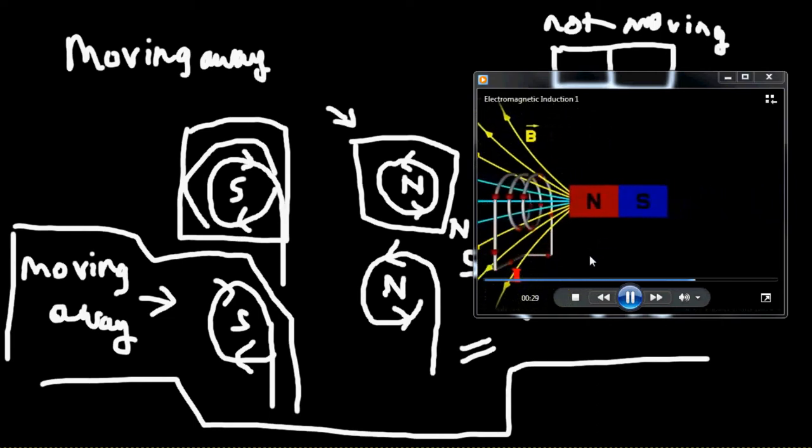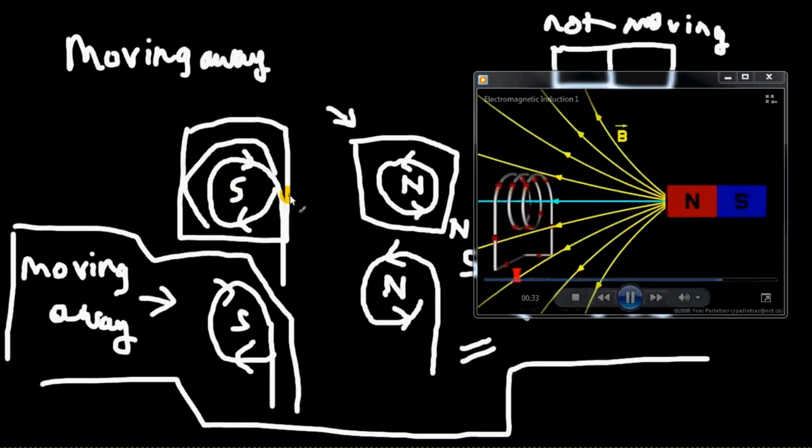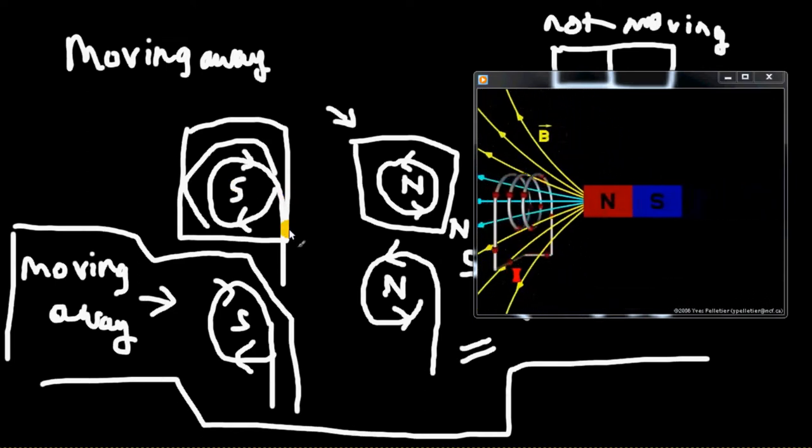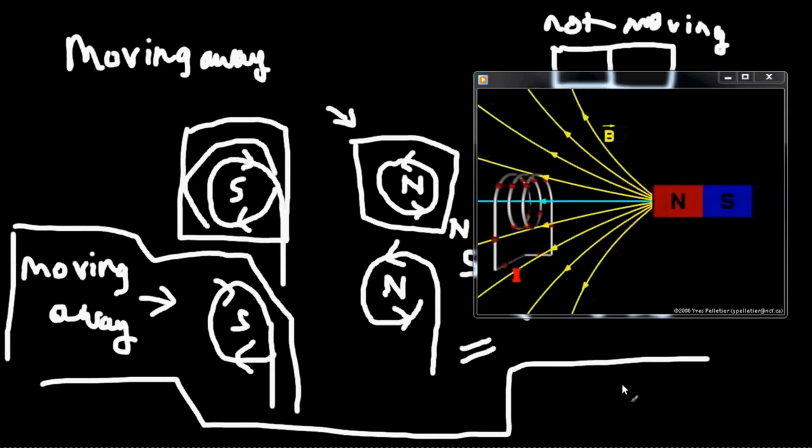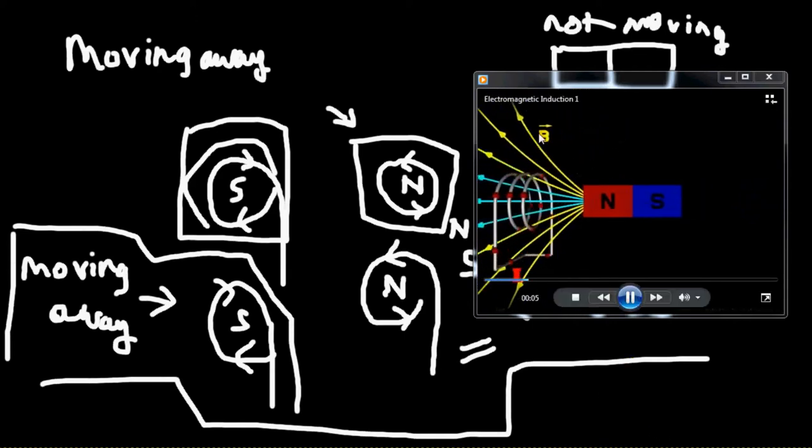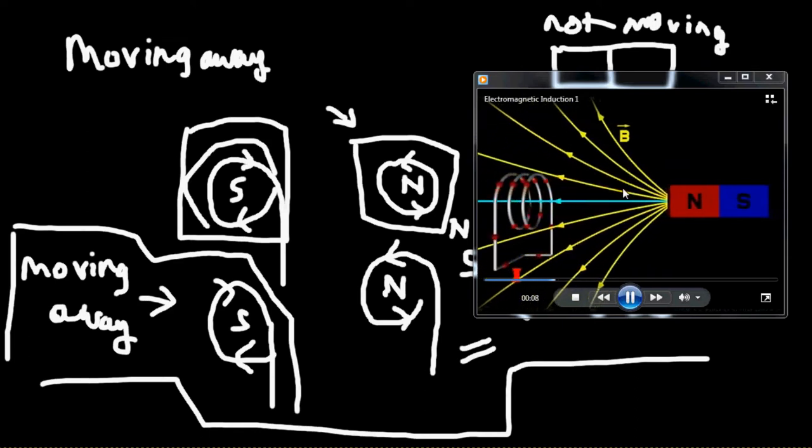So here it was actually Faraday who conducted these experiments and he put forward his theory and what he said was largely related to flux. Flux is, you know that every magnet will have magnetic field lines around it like is shown over here as well. You can see the yellow lines and the blue lines here. Those are the magnetic lines.